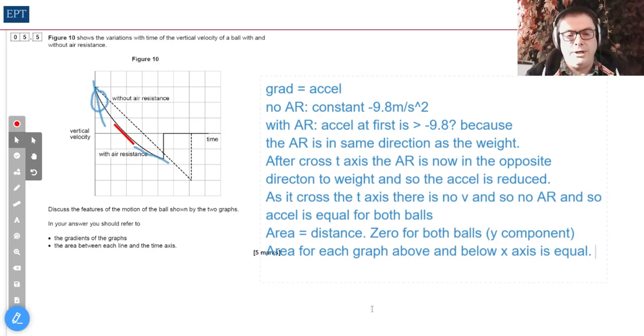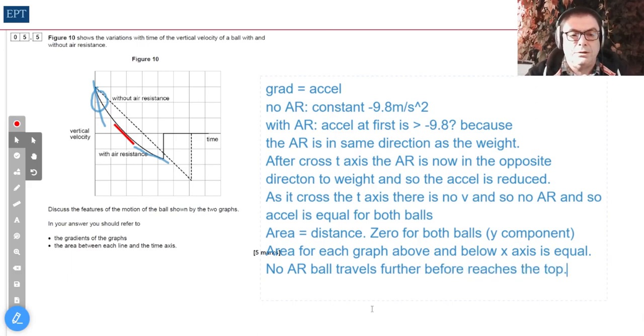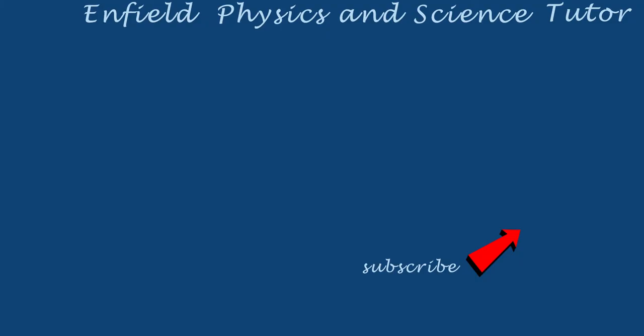That doesn't mean that the area under the one with air resistance and the area under the one without air resistance is equal. I mean that for the air resistance graph, above and below are equal. The other thing we can say is that without air resistance, the ball travels further before it reaches the top, and that's because it's got no opposing forces. Brilliant question that last bit. Well, I think that was useful. It's a hard question—aren't they all, these A-level physics. I find a lot of my students that I tutor find this kind of question really tough, so I hope that was useful.